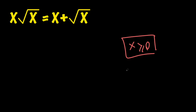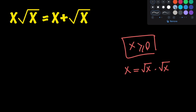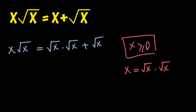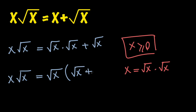Secondly, notice that x equals the square root of x times the square root of x, which means that our equation is equivalent to: x times the square root of x equals the square root of x times the square root of x plus the square root of x. Now I can go ahead and factor out the square root of x on the right-hand side, giving x times the square root of x equals the square root of x times the quantity (root x plus 1).